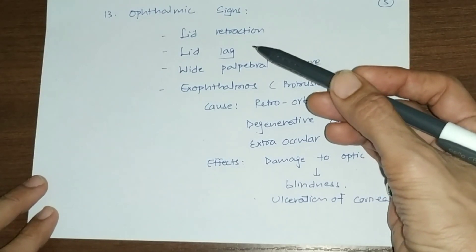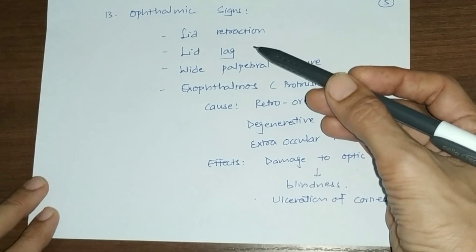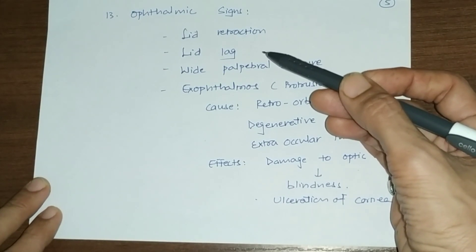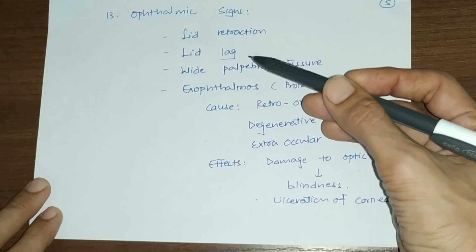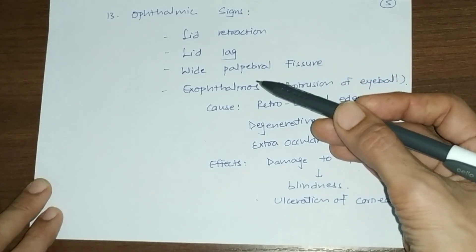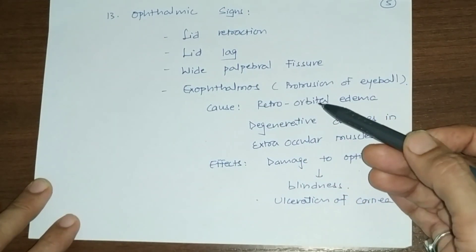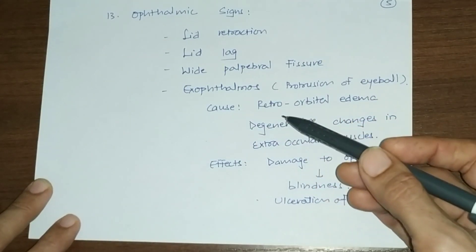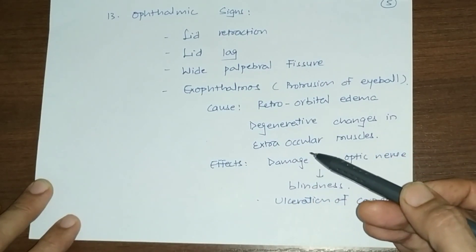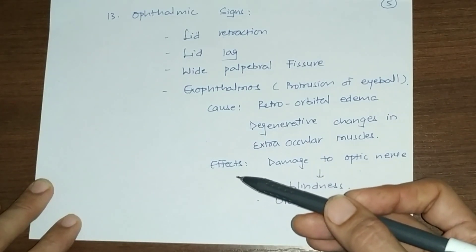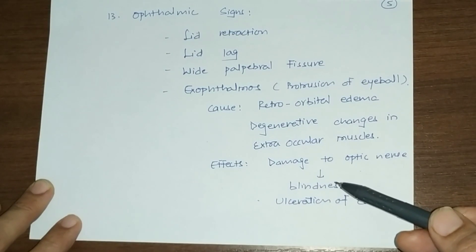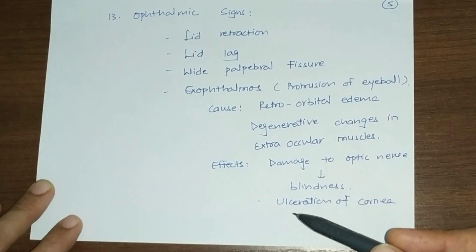Ophthalmic signs include lid retraction — the upper lid is retracted, producing a staring look, known as Dalrymple's sign. Lid lag occurs when the lid lags behind as the person tries to close the eye. The palpebral fissure becomes wide. Exophthalmos, or protrusion of the eyeball, is due to retro-orbital edema and degenerative changes in extraocular muscles. Effects of exophthalmos include optic nerve damage leading to blindness and ulceration of the cornea due to inability to close the eyes.